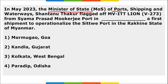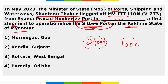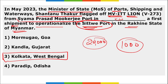The Minister of State for Ports, Shipping and Waterways, Shantanu Thakur, flagged off MV ITT Lion from Syama Prasad Mookerjee Port in Kolkata, West Bengal — the first shipment to operationalize the Sittwe Port in the Rakhine State of Myanmar. This shipment carried 20,000 bags containing 1,000 metric tons of cement and reached Sittwe Port on 9th May.